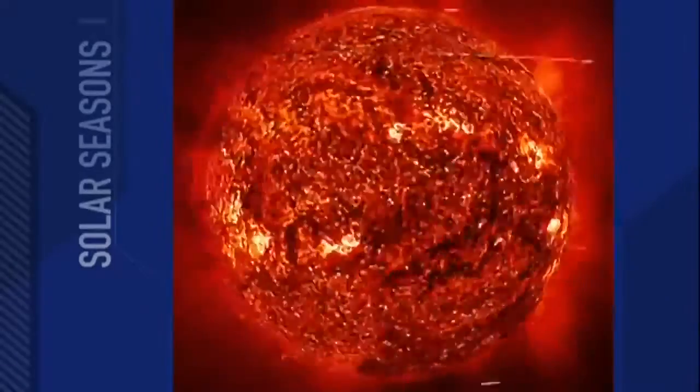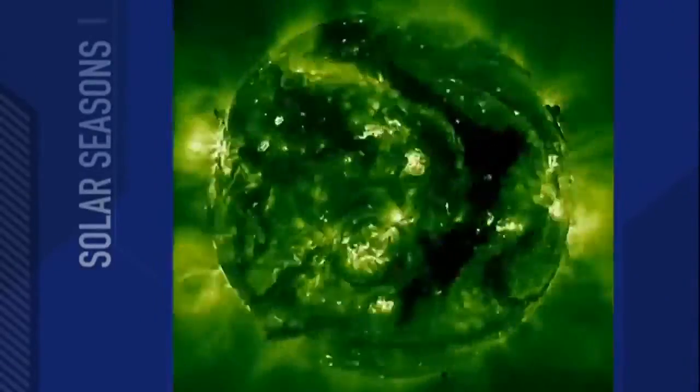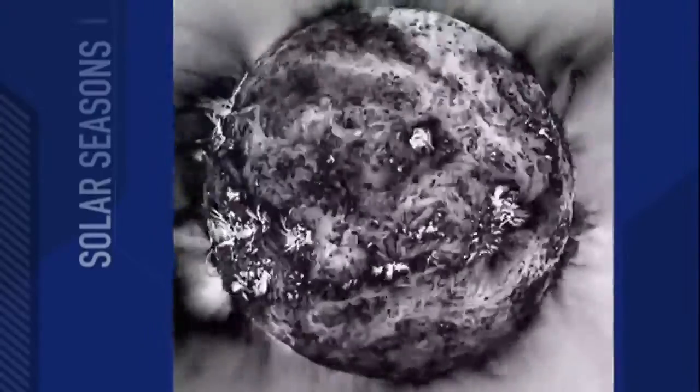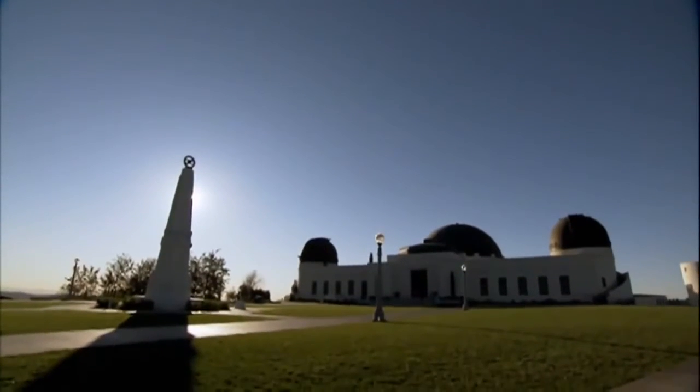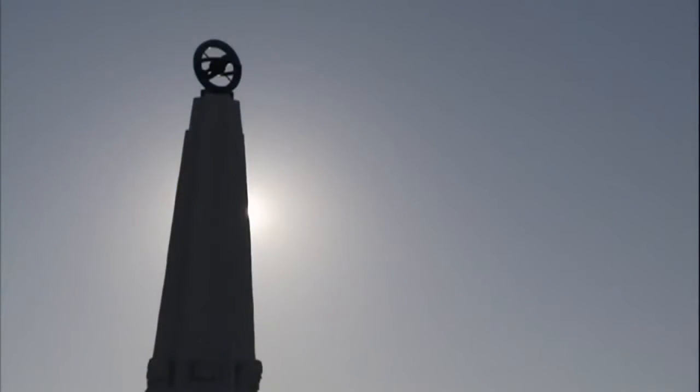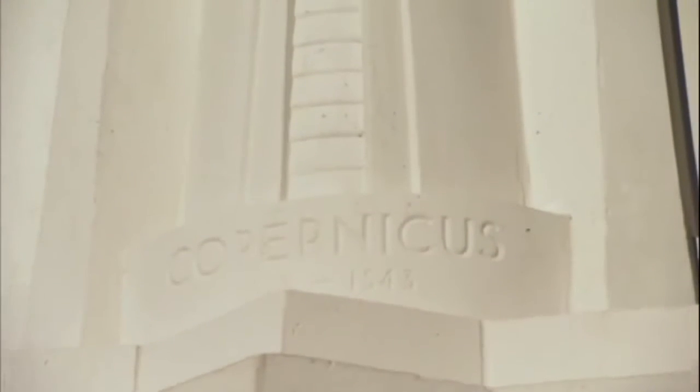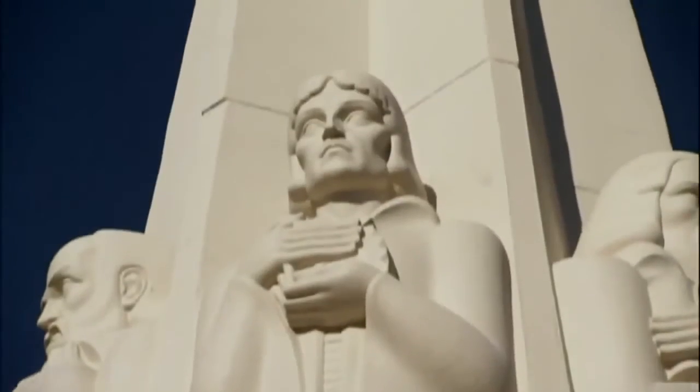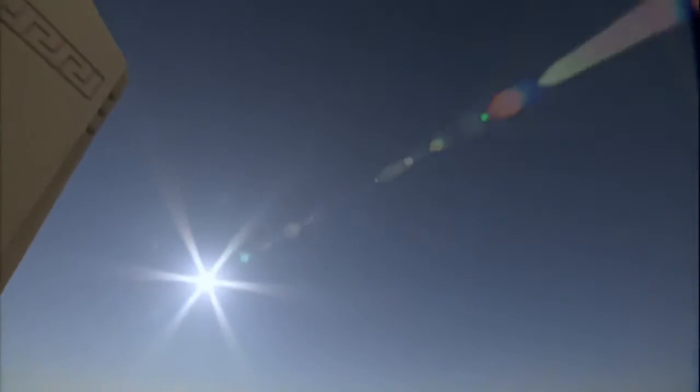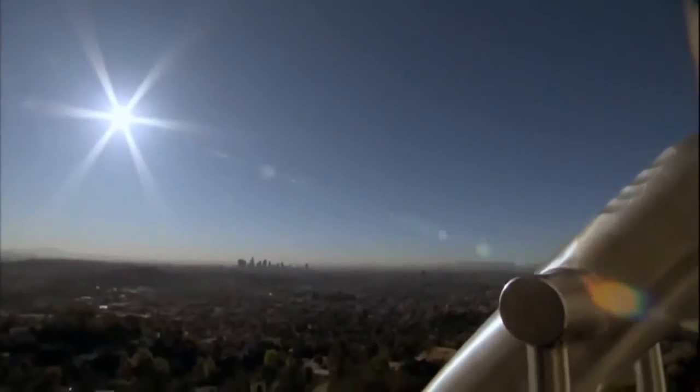It's this heat delivered to the corona that radiates out into space, filling our solar system with the sun's energy. But this energy is not constant. Our sun is an ephemeral body, never the same from one day or one year to the next. Like earth changes with seasons, so does the sun, and when the solar seasons change, anything can happen.